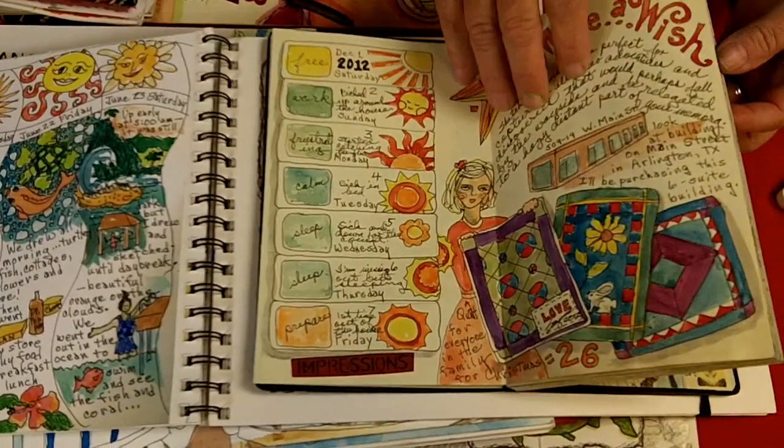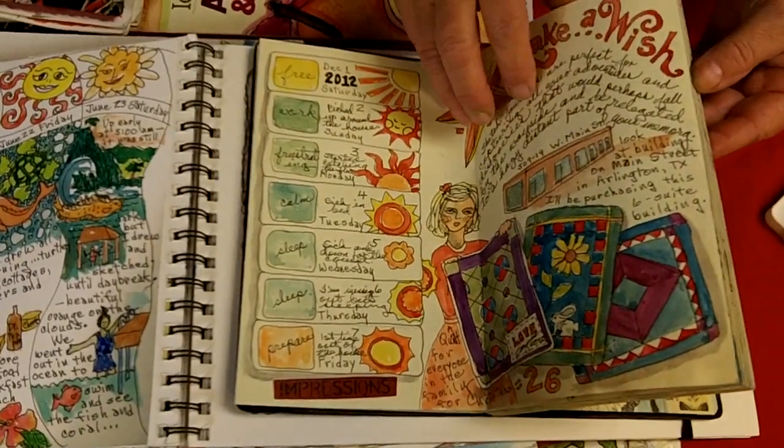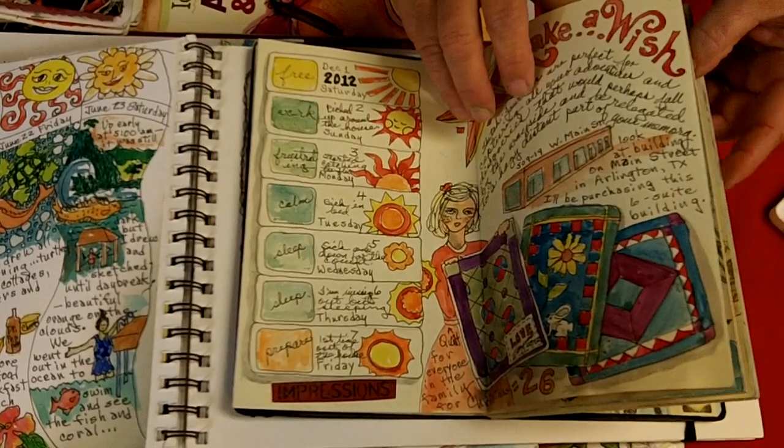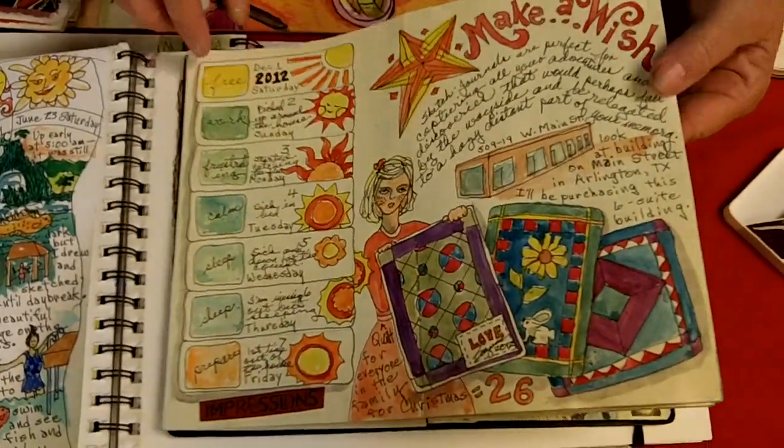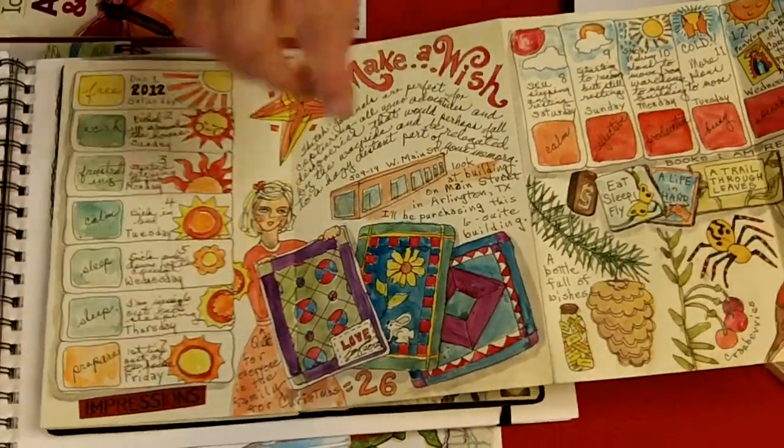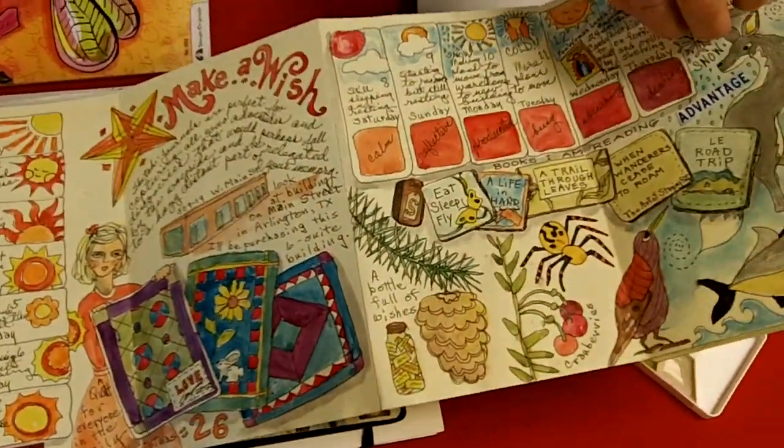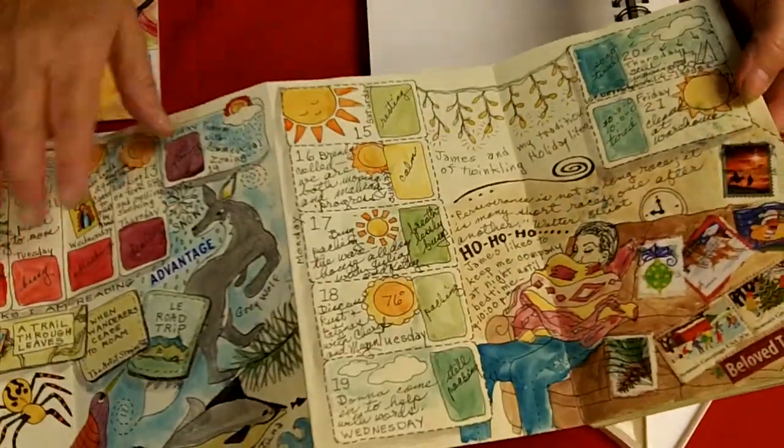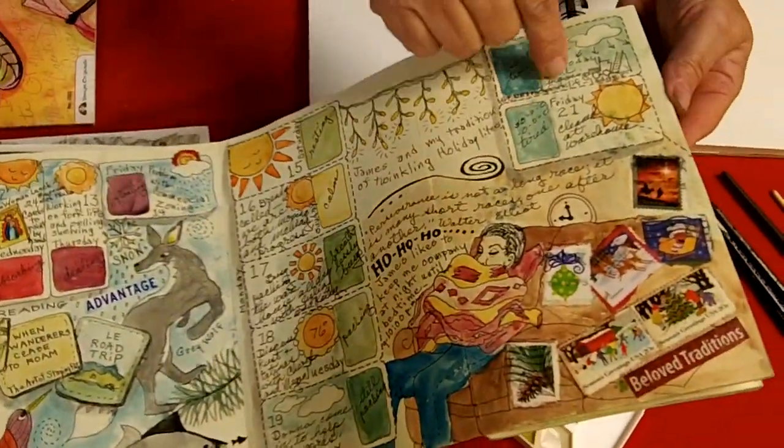And then one year I kept a continuous sketchbook. I did something every single day during the year. So this was my first page. You can see this is a week, seven boxes. Another week, seven boxes. Another week, seven boxes.